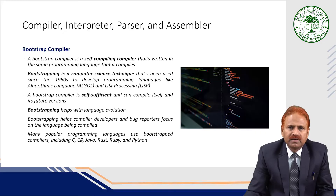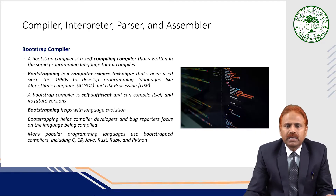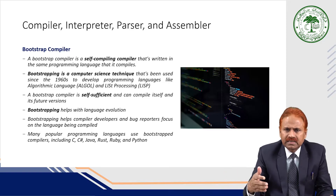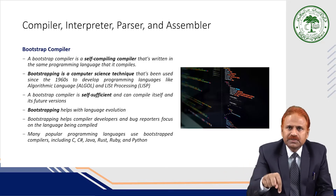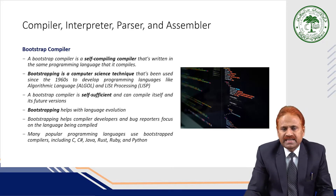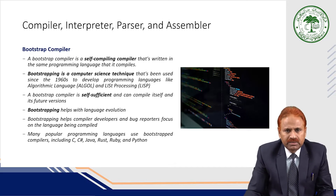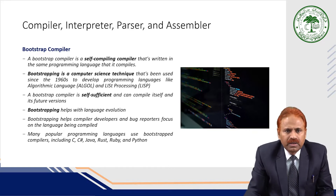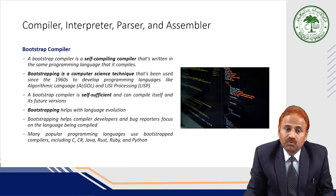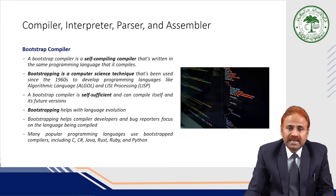Another type of compiler is known as a bootstrap compiler. A bootstrap compiler is a self-compiling compiler written in the same programming language that it compiles. For example, if we are running a C program, the compiler itself is written in C. Bootstrapping is a computer science technique used since 1960 to develop programming languages like ALGOL and LISP. A bootstrap compiler is self-sufficient and can compile itself and its future versions, helping with language evolution.